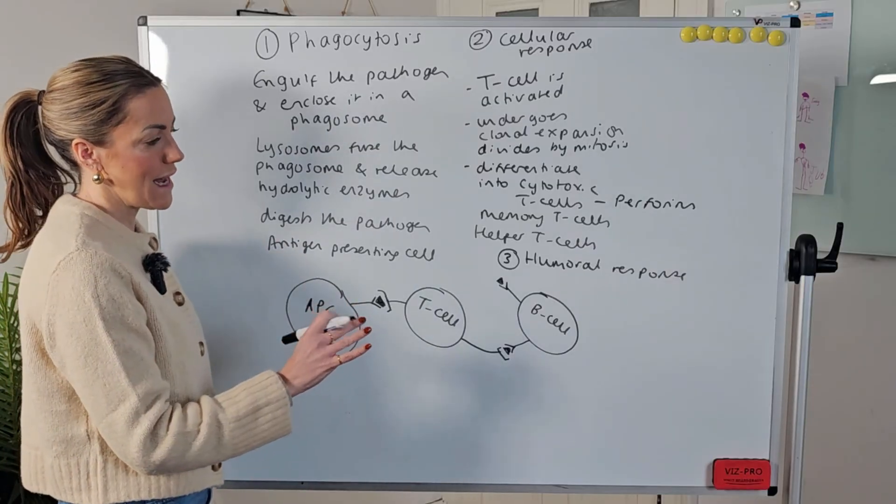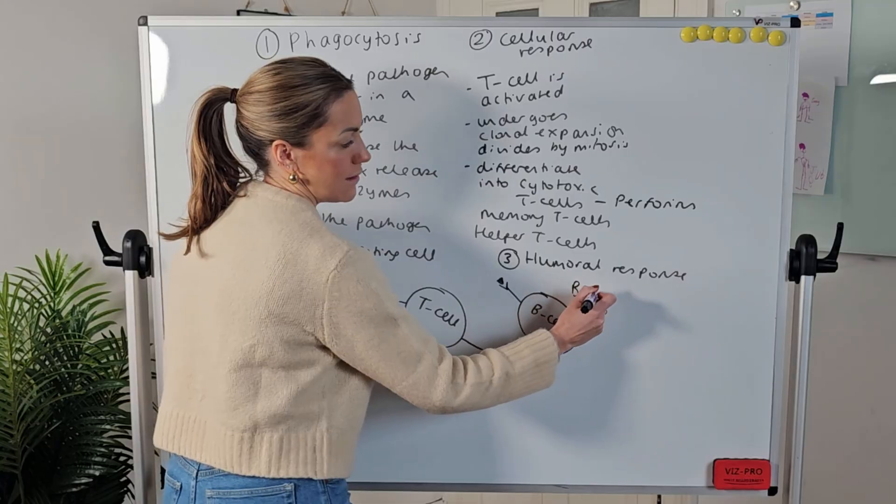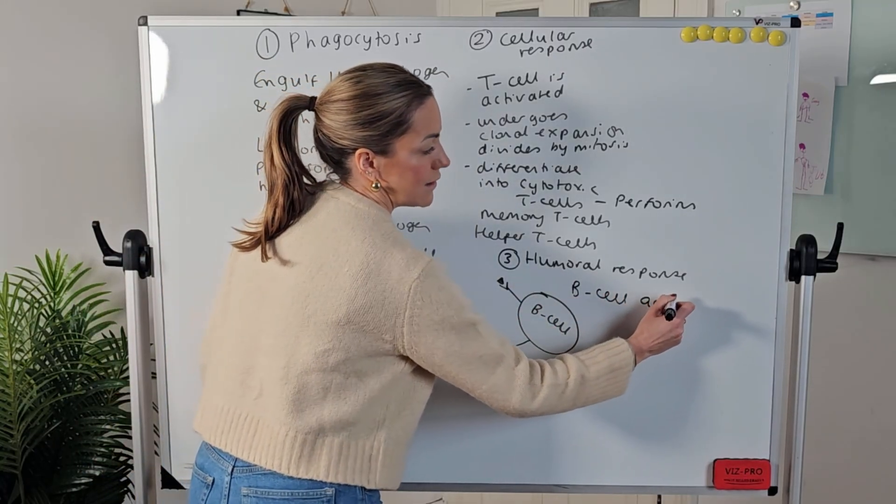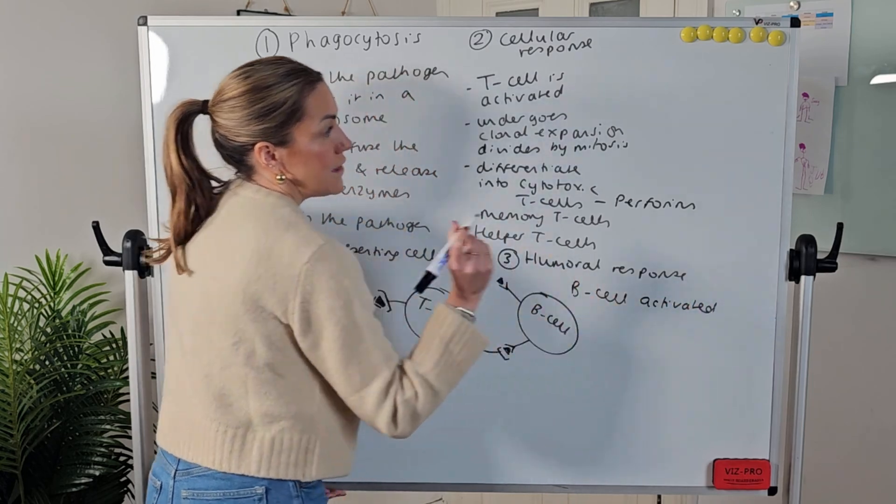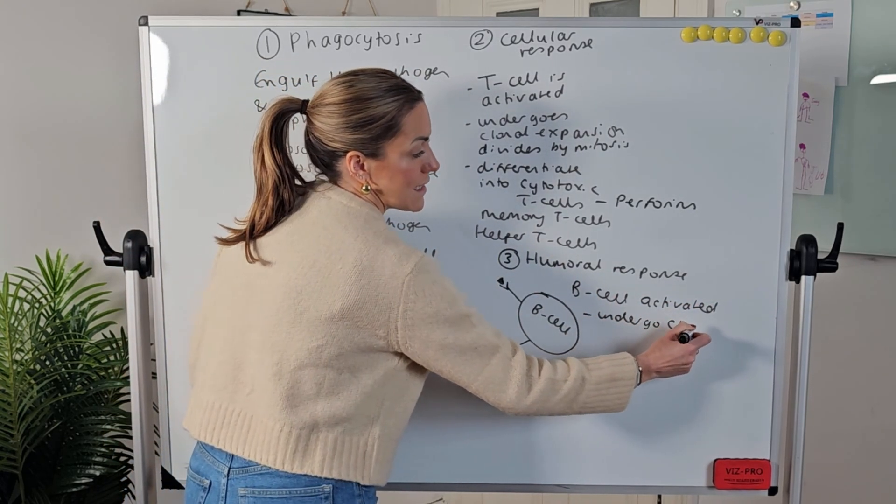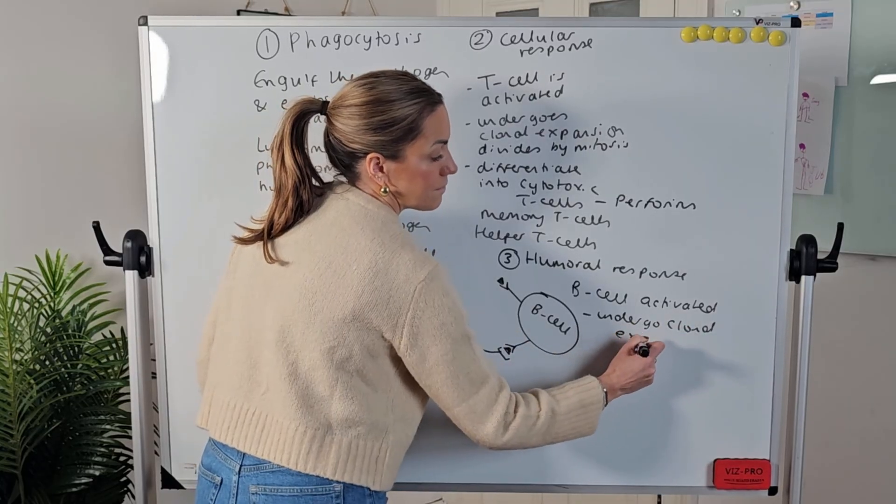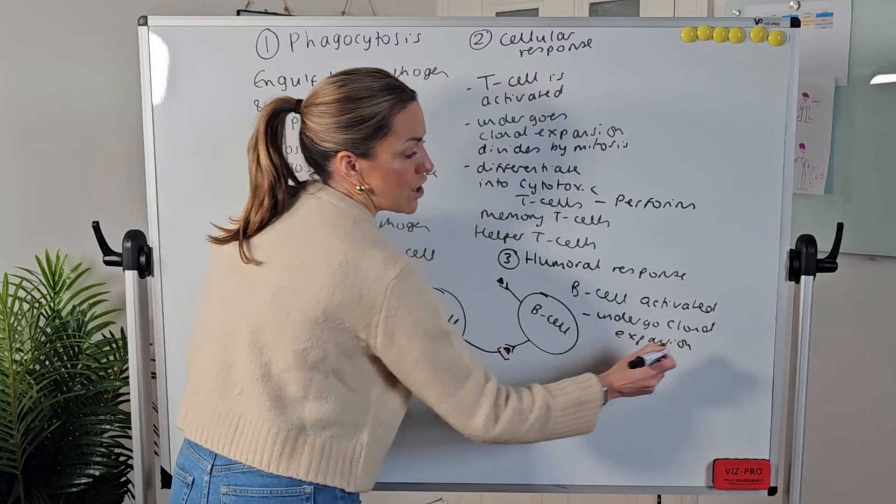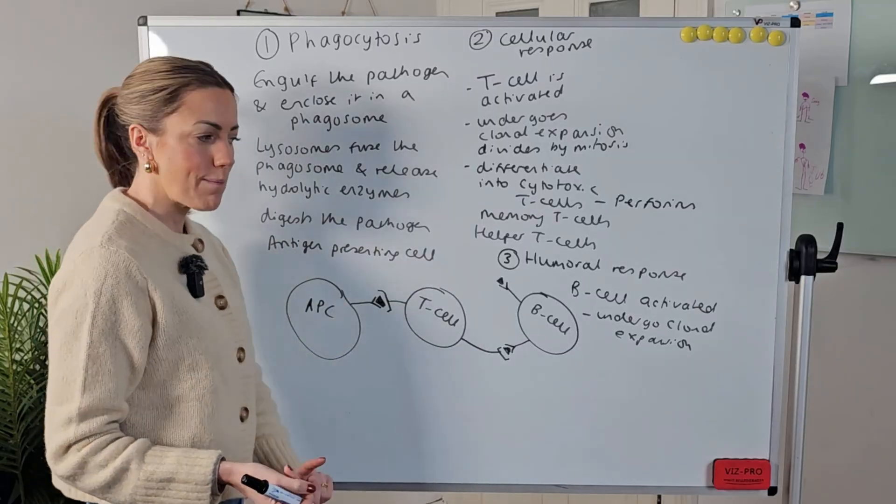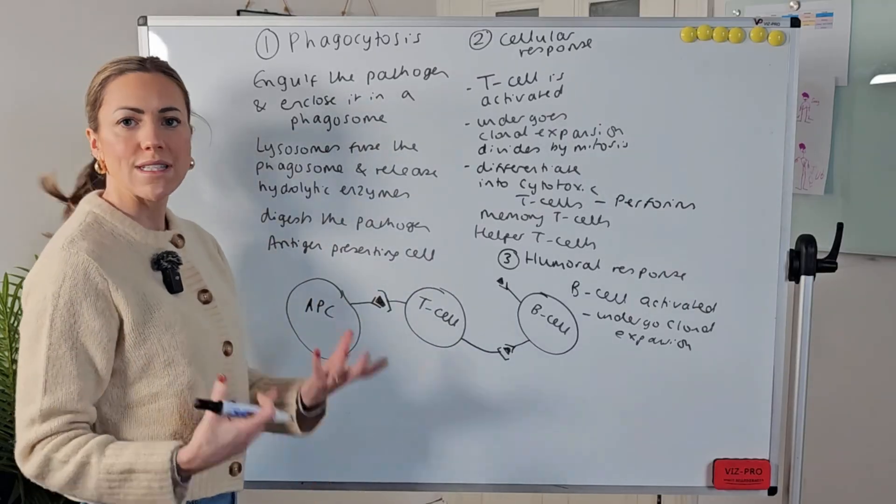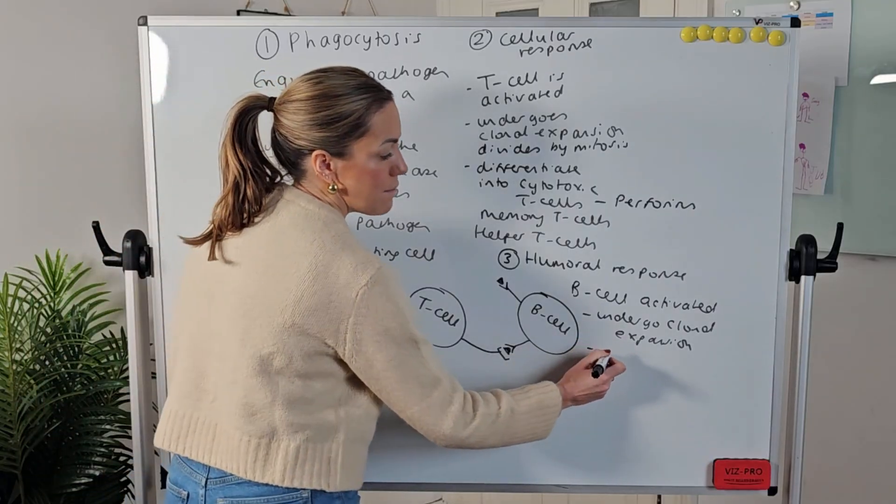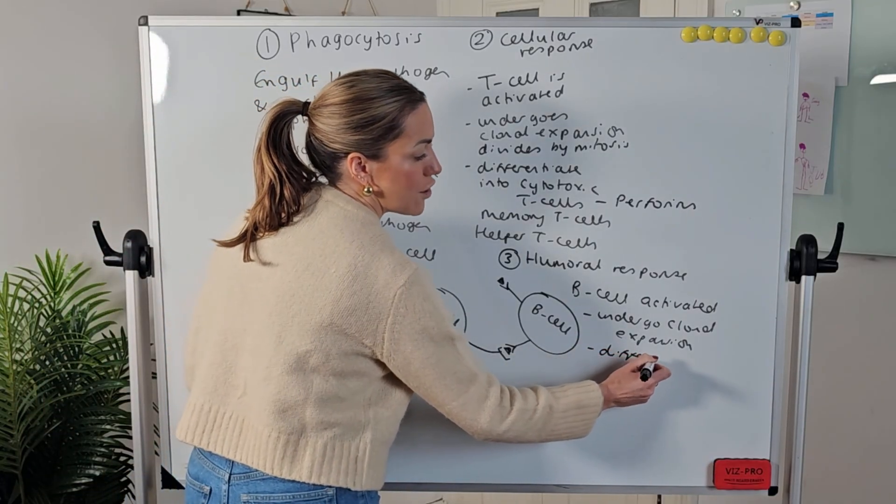Once the B cell has been activated or undergone clonal selection, then it's going to undergo clonal expansion just like the T cell. So clonal selection or B cell activated by the T helper cell then clonal expansion or we can just say it clones itself by mitosis or produces many clones. Then the B cells are going to differentiate.